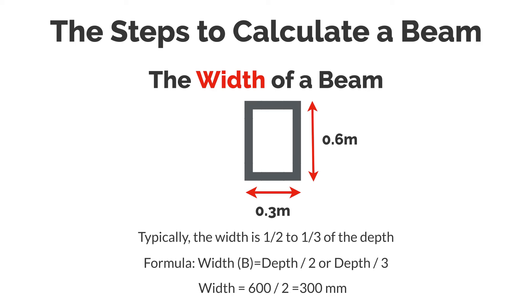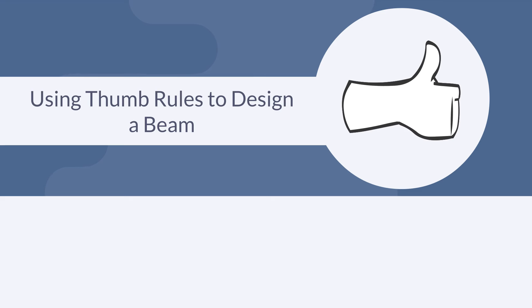Now for quick and rough calculations, thumb rules can be extremely helpful. These are simple guidelines that don't require advanced maths, yet they provide a reasonable estimate for beam sizes during the early stages of design.